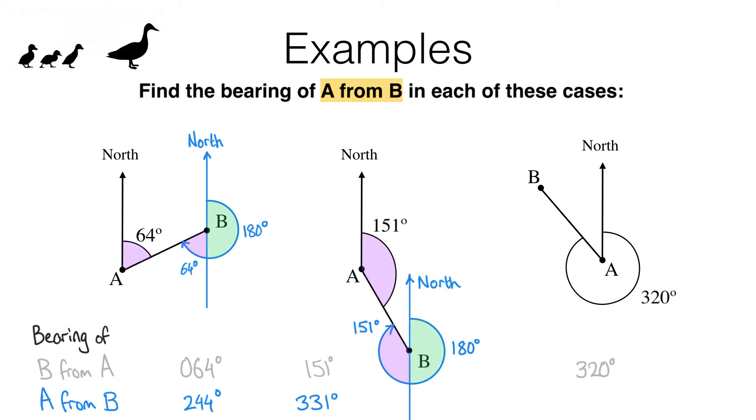Moving on to the last one, this is the angle we are looking for. To help me find the size of this angle, I'm going to extend this north line to the south, just like in the previous questions. Notice that I have a pair of alternate angles on parallel lines here and here.